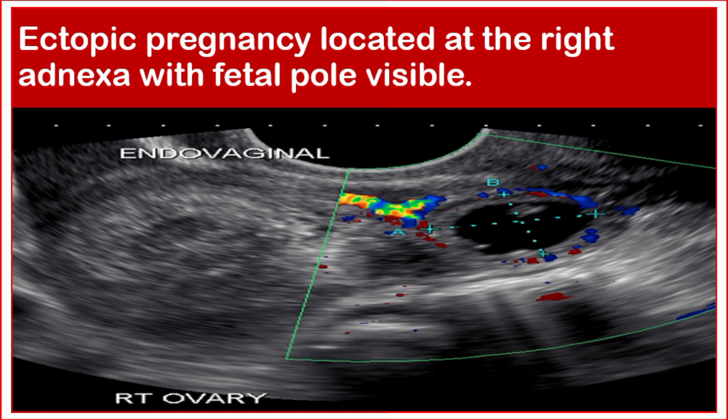The adnexal mass has a specificity of 100 percent when it contains a yolk sac or live embryo. Tubal ring sign: a hypervascular, hyperechoic ring surrounding an extra-uterine gestational sac.